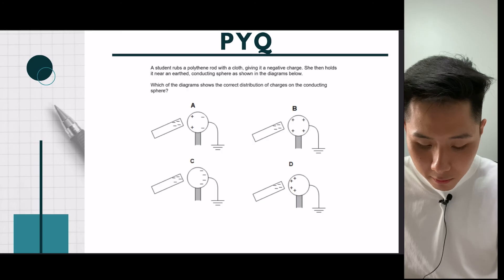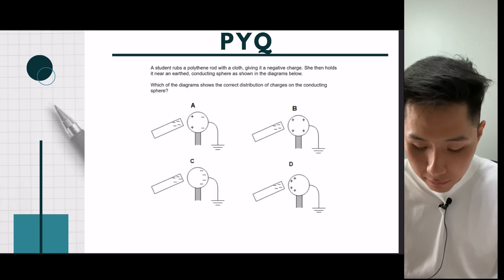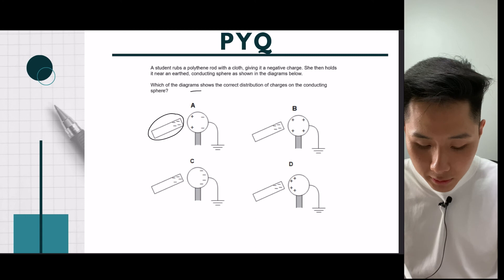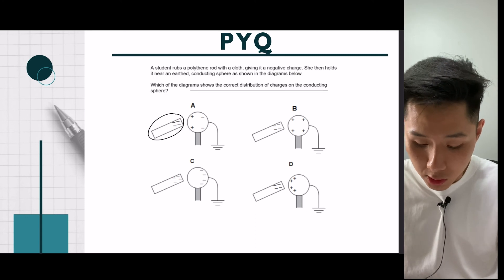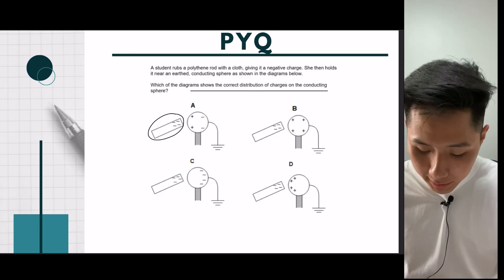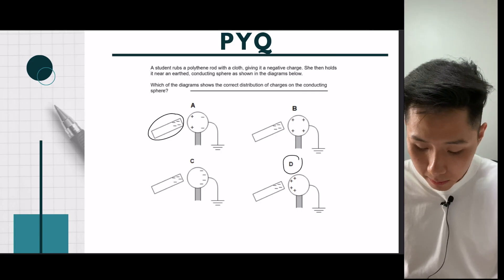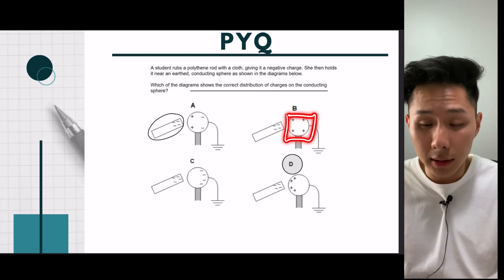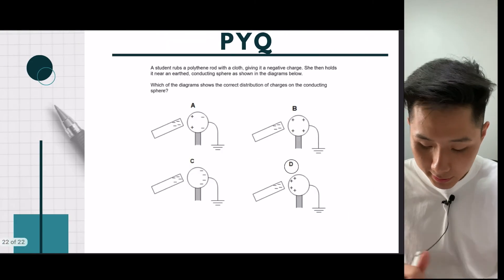Last question: a student rubbed a polythene rod with a cloth, giving it a negative charge. She then held it near a conducting sphere as shown in the diagram. Which of the diagrams shows the correct distribution of charges? The rod has a negative charge, and we know that a negative charge will attract positive charges. Among the four diagrams, D has the most logical representation — you can see the positive charges are being attracted towards the rod. So the correct answer is D.